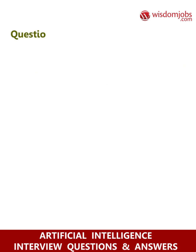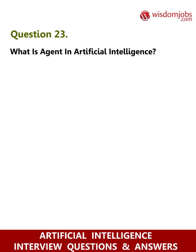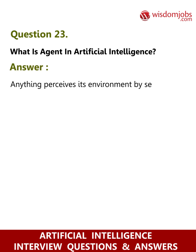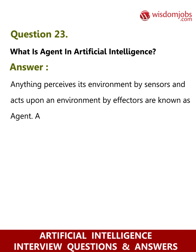Question 23: What is an agent in artificial intelligence? Answer: Anything that perceives its environment by sensors and acts upon an environment by effectors is known as an agent. Agent includes robots, programs, and humans, etc.